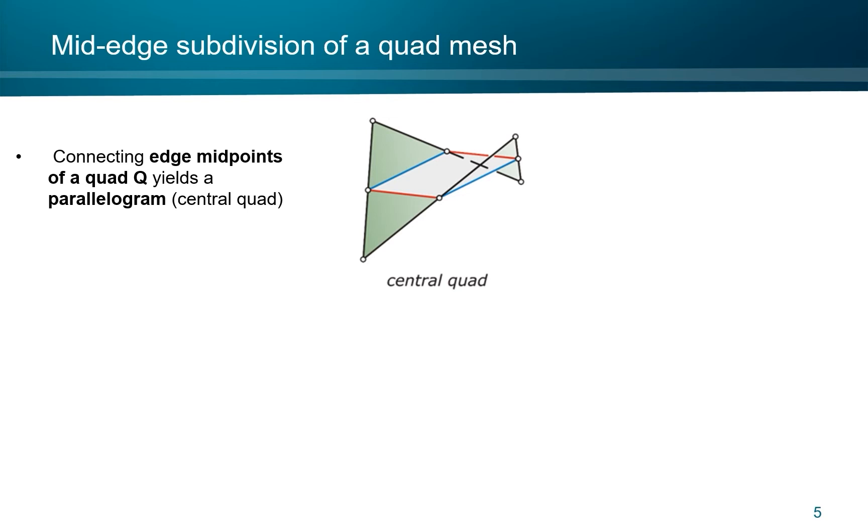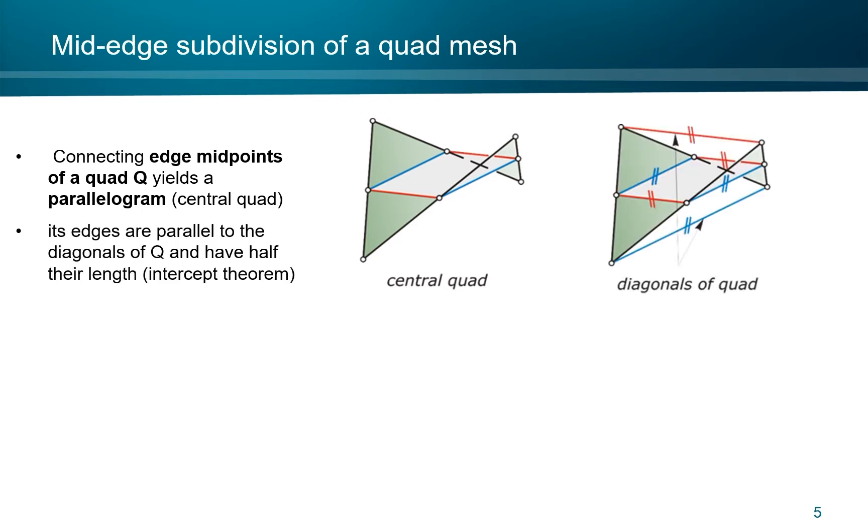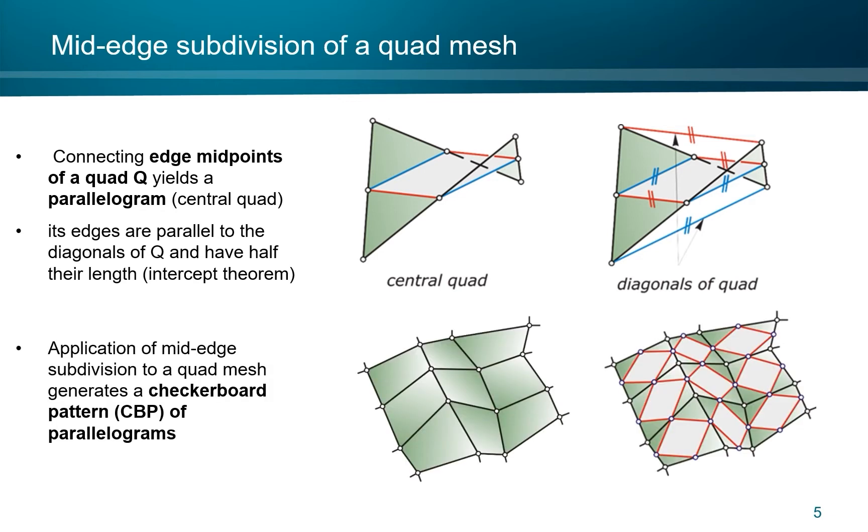Given a quadrilateral in space, we connect its edge midpoints and yield a parallelogram. The edges of the parallelogram are parallel to the diagonals of the quad and they have half of their length. Applying this to a quad mesh we get the checkerboard pattern of parallelograms.